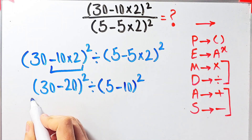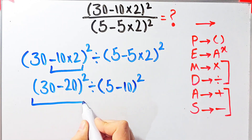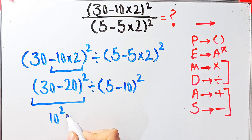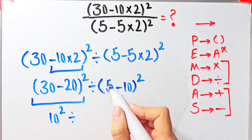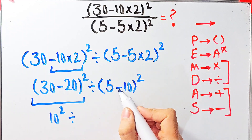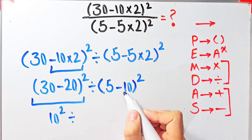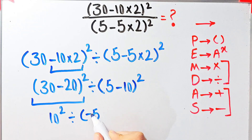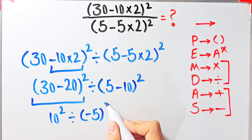Now we simplify the parentheses: 30 minus 20 equals 10, so we have 10 to the power of 2. And 5 minus 10 equals negative 5, so the second part is negative 5 to the power of 2. The question is now 10 to the power of 2 divided by negative 5 to the power of 2.